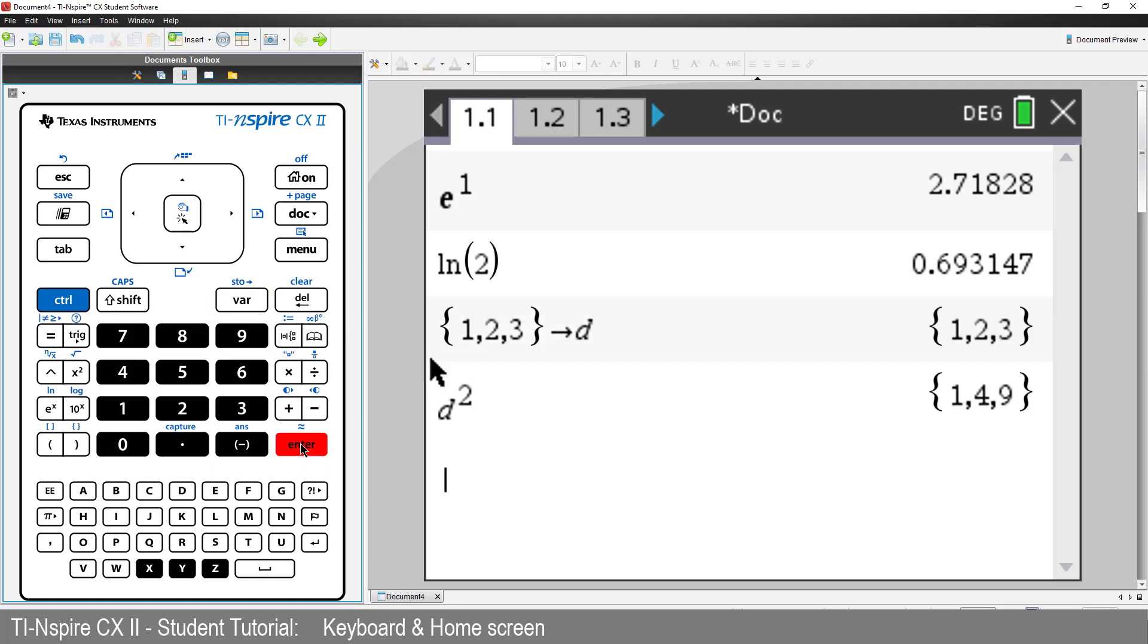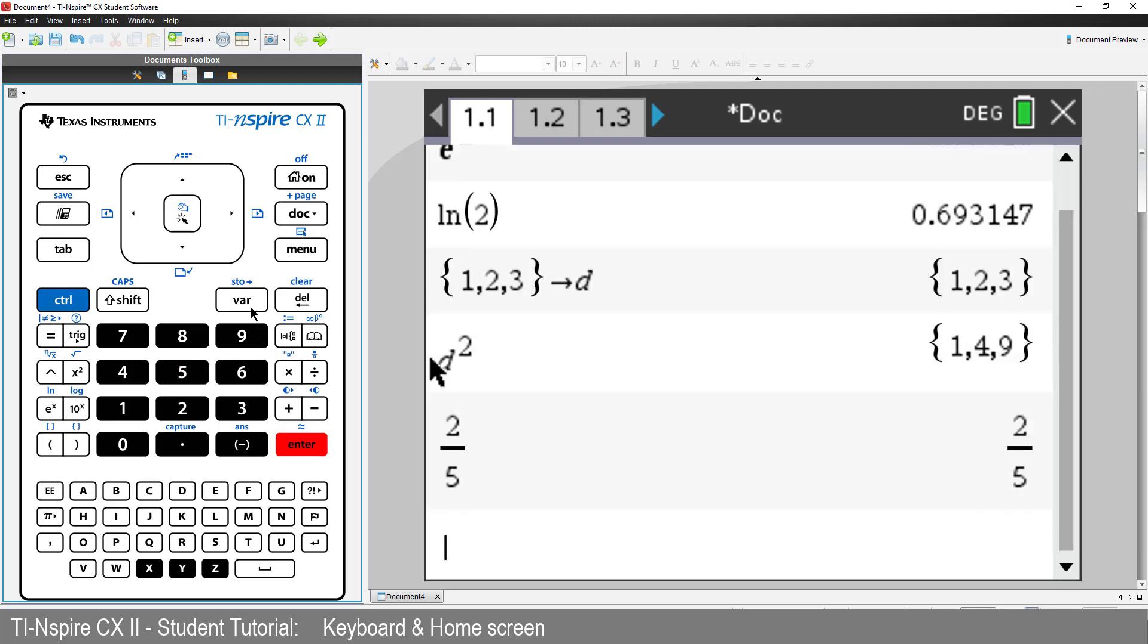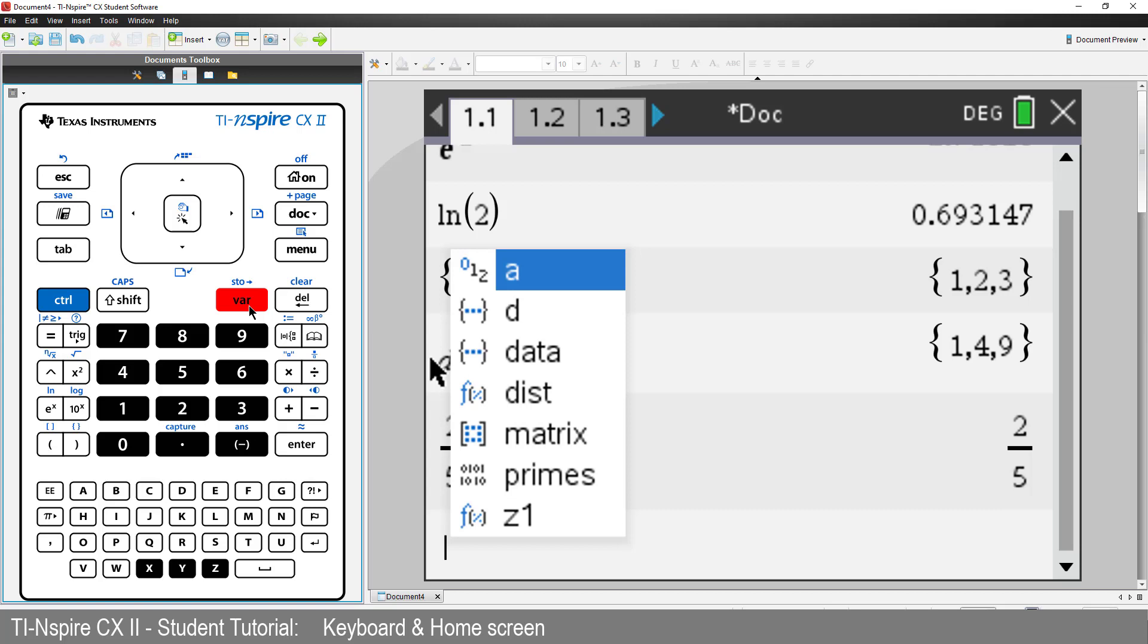The variable key is a bit like the memory recall on a scientific calculator. But with TI-Inspire you have a lot more options for variables. They could be a single value, list of values, an equation, matrix, or many of the other variables that you can store.